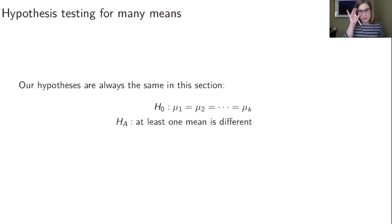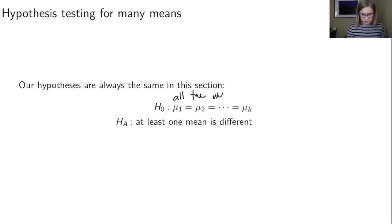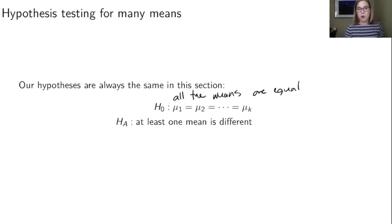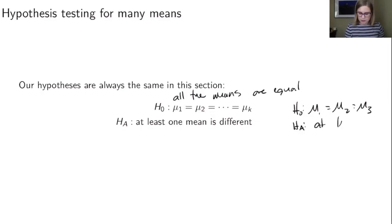When we do hypothesis testing for many means, our hypotheses are always the same. The null hypothesis is always that all the means are equal: μ1 = μ2 = ... = μk. In the music example that's μ1 = μ2 = μ3 because there are three groups. The alternative hypothesis is that at least one mean is different.